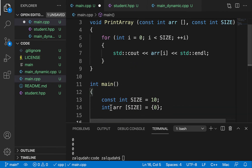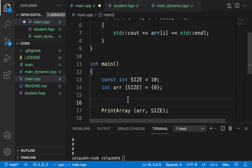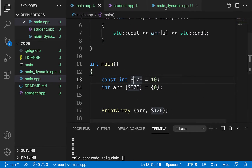The alternative to both scenarios — unknown size at compile time and maintaining space after returning from a function — is dynamic memory allocation. With dynamic memory allocation, data is stored on the heap. Data stored on the heap is not automatically managed; the programmer is supposed to manage that space, allocating it when needed and deleting it when done.